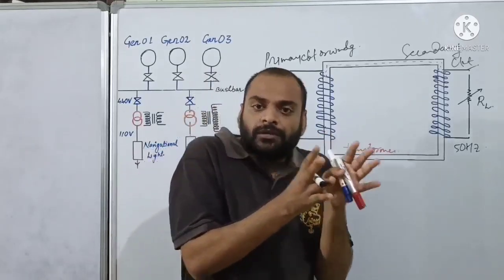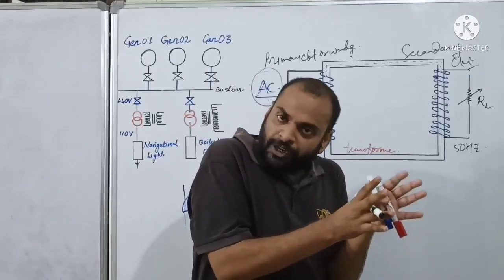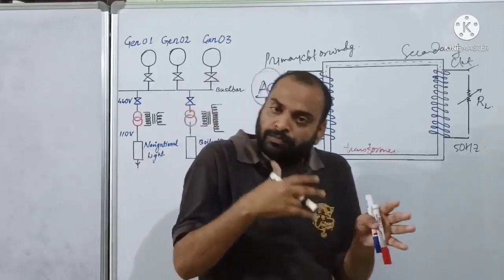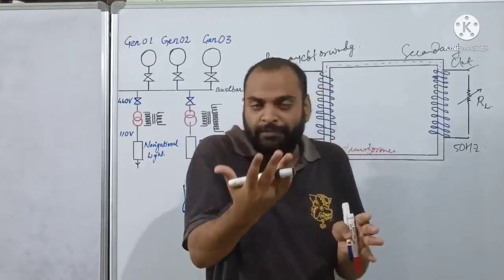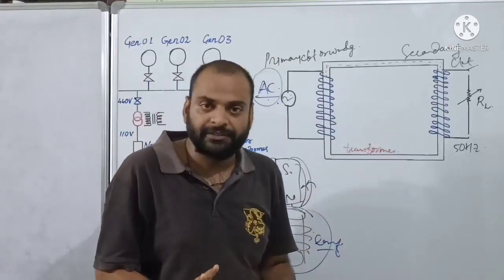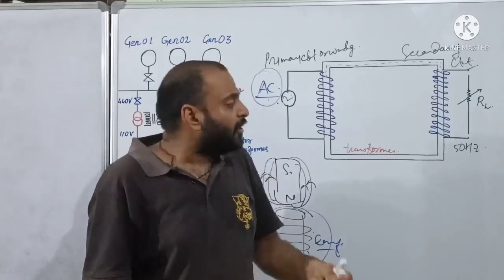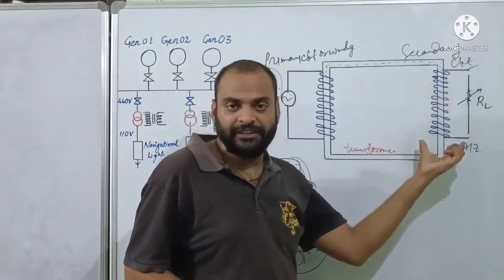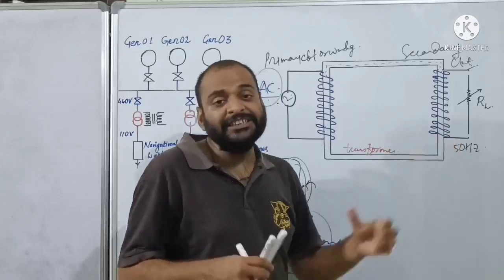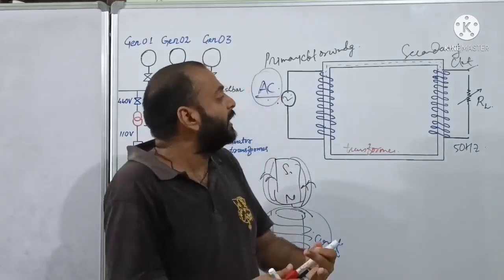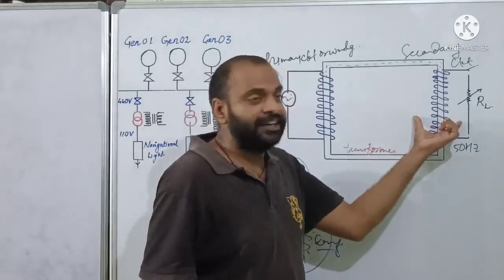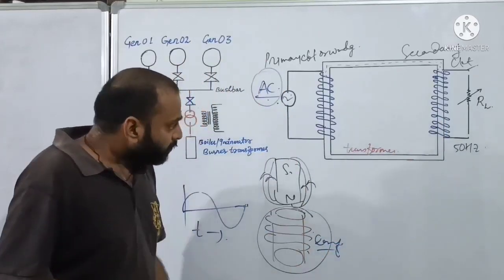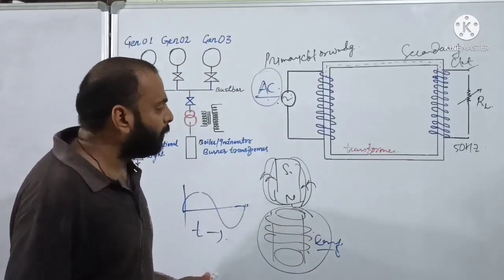If more magnetic flux is linked with a greater number of conductors, more EMF is induced inside the conductor. So here we have magnetic flux linked with the conductors, and this is our EMF induced on the secondary side.